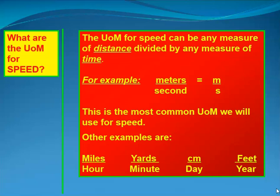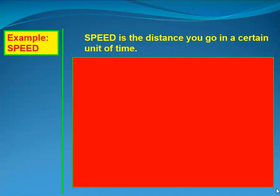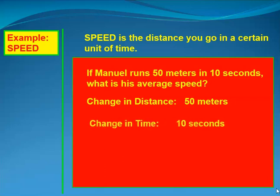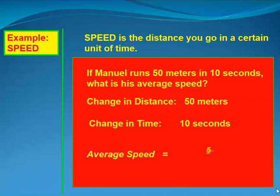Speed is the distance you go in a certain amount of time. For example: if Manuel runs 50 meters in 10 seconds, what is his average speed? The change in distance is 50 meters, the change in time is 10 seconds, so average speed equals 50 meters divided by 10 seconds, which equals 5 meters per second.